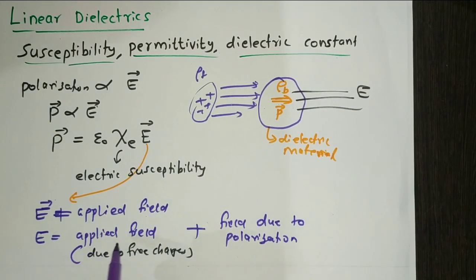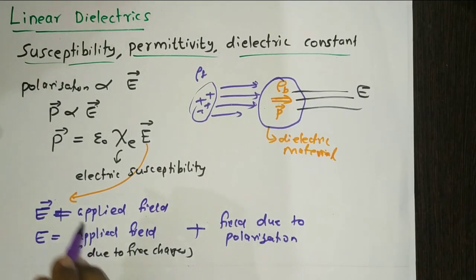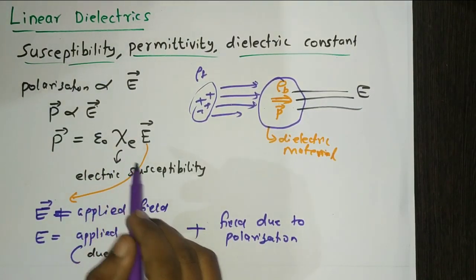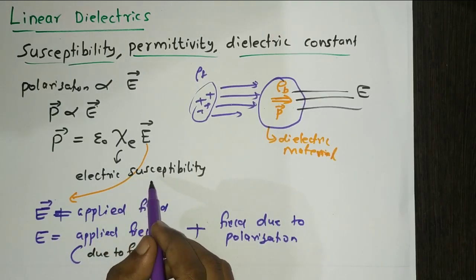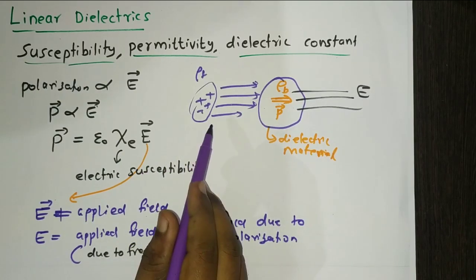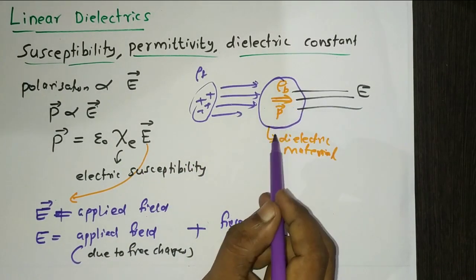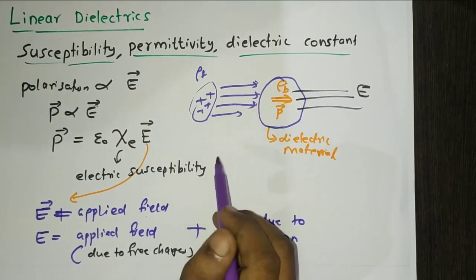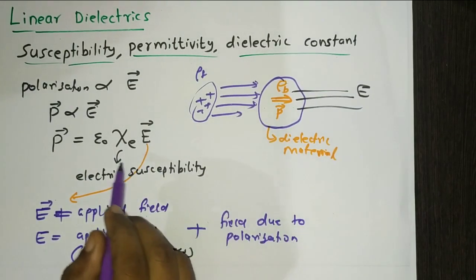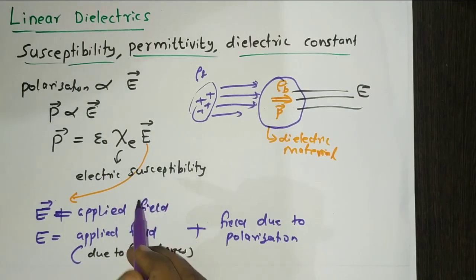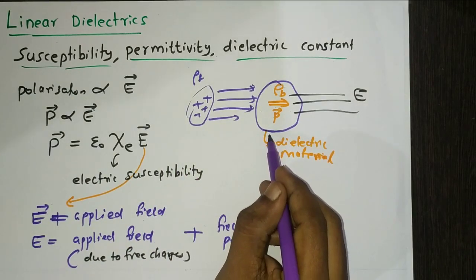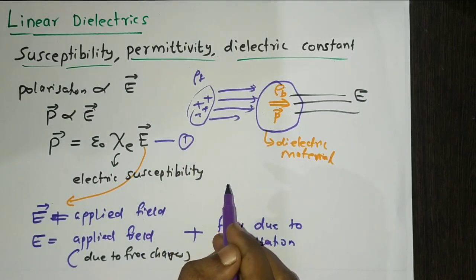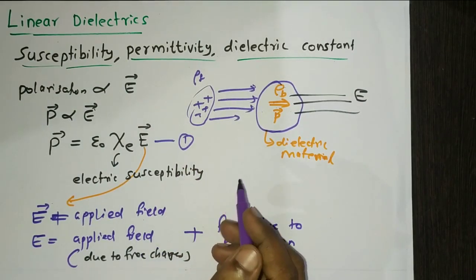The electric field E is the combination of both the applied field and the field due to the polarization. The meaning of χ_E — the electric susceptibility — is how susceptible or how responsive the system is to the applied electric field. A dielectric medium that satisfies the equation P = ε₀ χ_E E is called a linear dielectric medium.